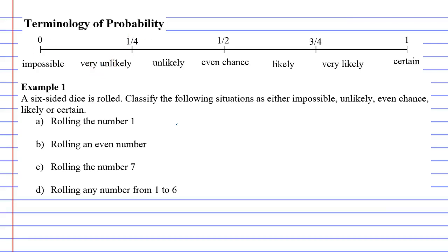Terminology of probability. When we do the terminology of probability, we have a scale that can help us with descriptors at the bottom and numbers at the top. It ranges from zero to one, or you could say from impossible to certain. If something has a zero chance of happening, we say it's impossible. If something's certain to happen, we say it's got a probability of one, which is equivalent to 100% if I did it as a percentage.